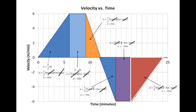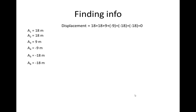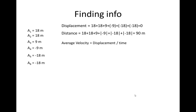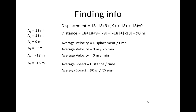From the individual areas, we find the total displacement by adding them all together — noting the signs for the last three areas — giving a displacement of zero. For distance, you use the absolute value of all individual areas, giving 90 meters. Average velocity is displacement divided by time: 0 divided by 25 minutes = 0 meters per minute. Average speed is distance divided by time: 90 divided by 25 = 3.6 meters per minute.